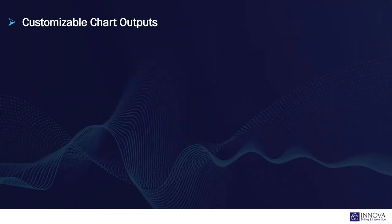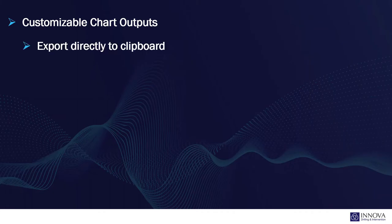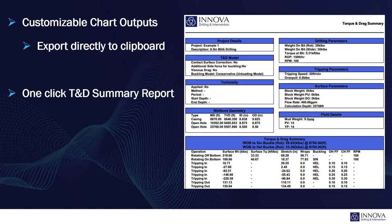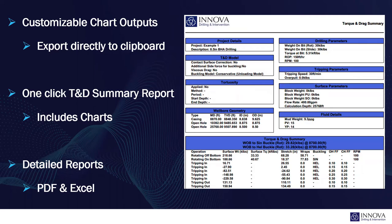Innova's user-friendly application includes a variety of customisable reporting outputs, including editable charts, which can be exported directly to clipboard, allowing them to be easily added to other documents such as Word or PowerPoint. A one-click torque and drag summary report, which details all the relevant information including if there is any buckling present, and more detailed reports with user-definable content are also available, which can be output in both PDF and editable format.